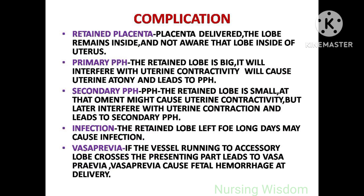Complications: The first complication is retained placenta. After the main placenta is delivered, the accessory lobe remains inside, and if the midwife or doctor is not aware of that lobe present inside the uterus, it will lead to retained placenta. Then, primary PPH: if the retained lobe is big, it will interfere with uterine contractility and cause uterine atony, leading to immediate bleeding — that is primary PPH.